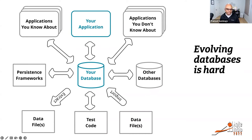Once coupling is tight, it's hard to even improve the database — all the other constituents in your enterprise will stop you from making changes because they're dependent on it as-is. Your architecture becomes really brittle. Over the next few slides, I want to explain how you can make changes without breaking any of these applications, and over time evolve those applications to use the new design you've put in place. That gives you the evolutionary way of making database changes.